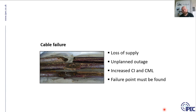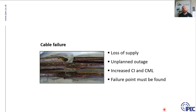Consequences of PD: the first is cable failure. If you've got a failure inside an underground cable, you'll see a loss of supply and an unplanned outage, with increased CI and CML — customer interruptions and customer minutes lost, which is a UK measurement. Every country has a similar measurement looking at the impact of a power failure. A failure point must be found, so you need fault location technology in order to conduct the repair and bring the system back online.